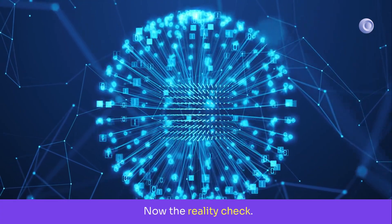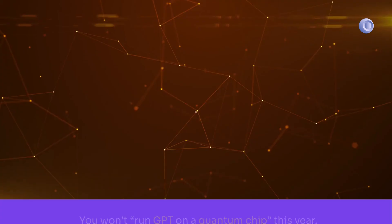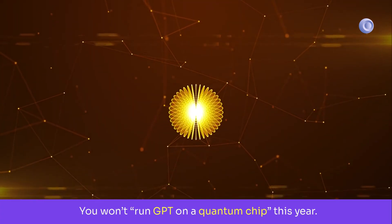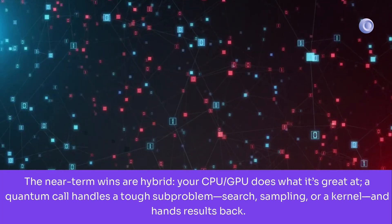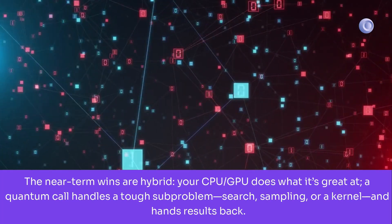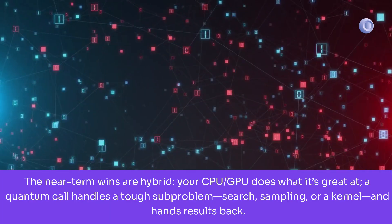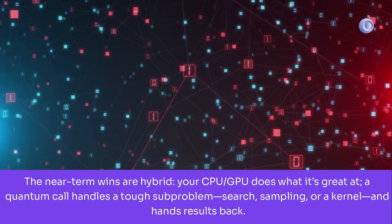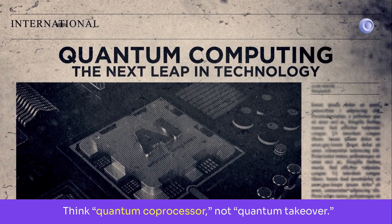Now the reality check. Today's devices are small and noisy. You won't run GPT on a quantum chip this year. The near-term wins are hybrid. Your CPU, GPU does what it's great at. A quantum call handles a tough sub-problem, search, sampling, or a kernel, and hands results back. Think quantum co-processor, not quantum takeover.